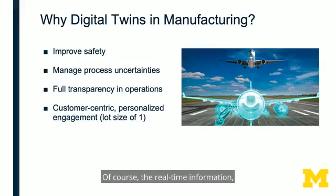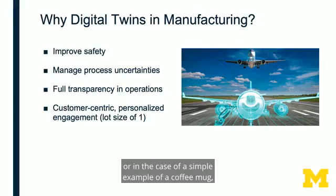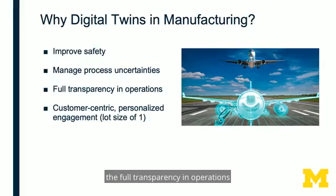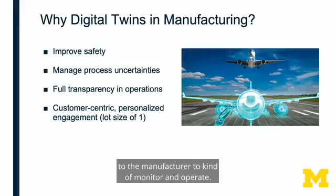Of course, the real-time information — as you saw in the case of electric motors or even the simple example of a coffee mug — the full transparency in operations actually gives the manufacturer far more control to monitor and operate.